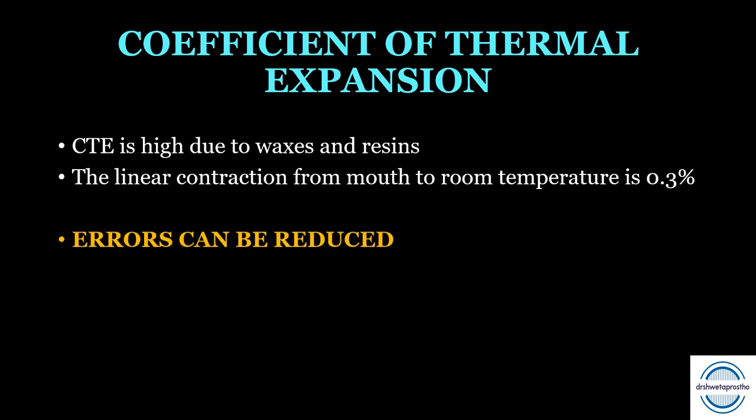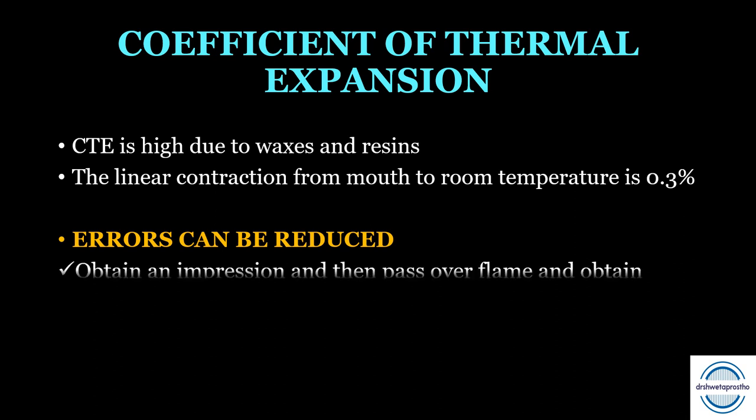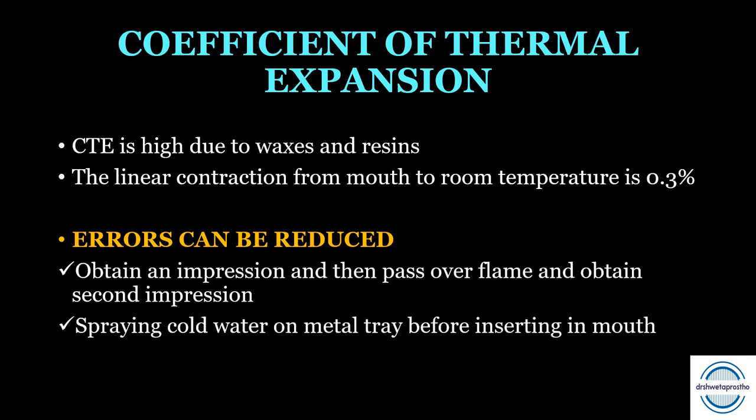Errors from thermal distortion can be reduced by two methods. First, obtain a normal impression, then pass it over a flame until the surface is softened, and obtain a second impression — during the second impression the shrinkage will be low because only the surface layer was softened. Second, spray cold water on the metal tray just before insertion, so the material adjacent to the tray hardens while the surface layer near the tissue remains soft.